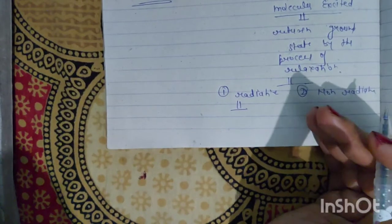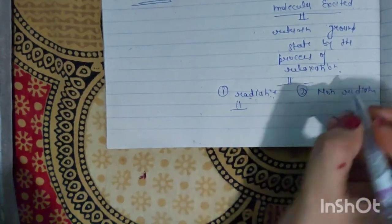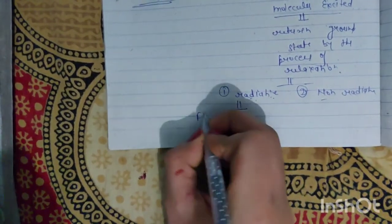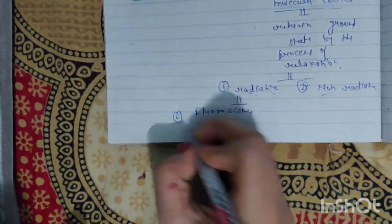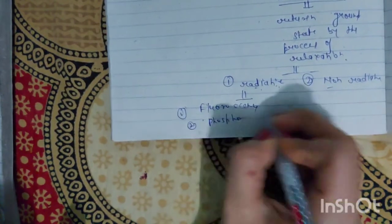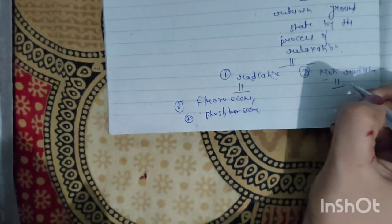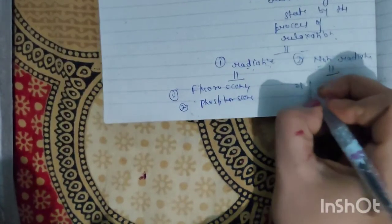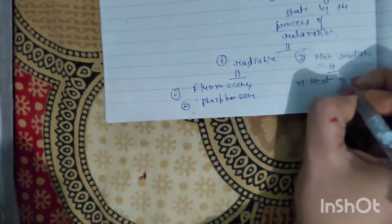When the molecule is excited, if we are doing radiation, we call it radiative. And if we are doing non-radiative, we call it non-radiative, meaning we don't have any light. Radiative process comes from fluorescence and phosphorescence. If we talk about non-radiative, then we call it heat produced and temperature increase.